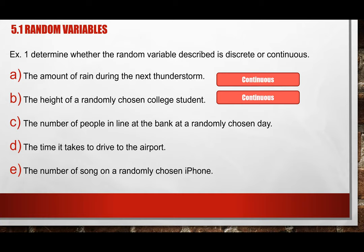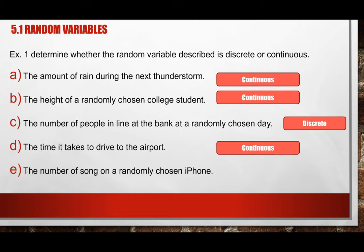Item C is the number of people in line — this is a fixed counting number. You can have 0, 1, 2, 3, or 4 people in line; you don't have 7 and a half of a person. So the number of people in line is discrete. Time, on the other hand, can be broken into hours, minutes, and seconds — it has an interval — so time is continuous.